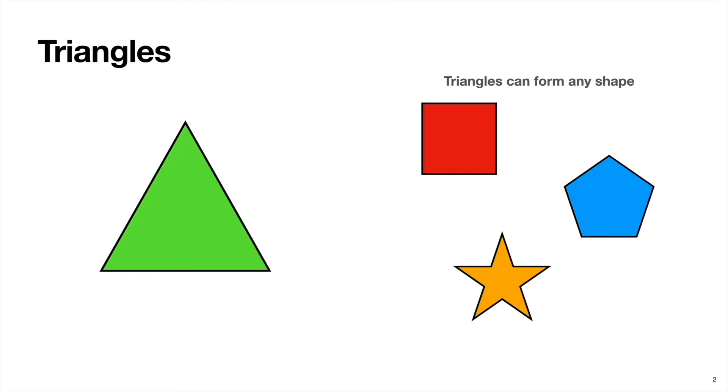And one neat thing about triangles is that we can use them to make any other polygon. For example, a square is really just two triangles stuck together. A pentagon can be made from four triangles like this. And a star is just the same pentagon, but with five triangles coming out of it. So one thought is, if we want to analyze the shape of our data, maybe we can break it down into a bunch of triangles.